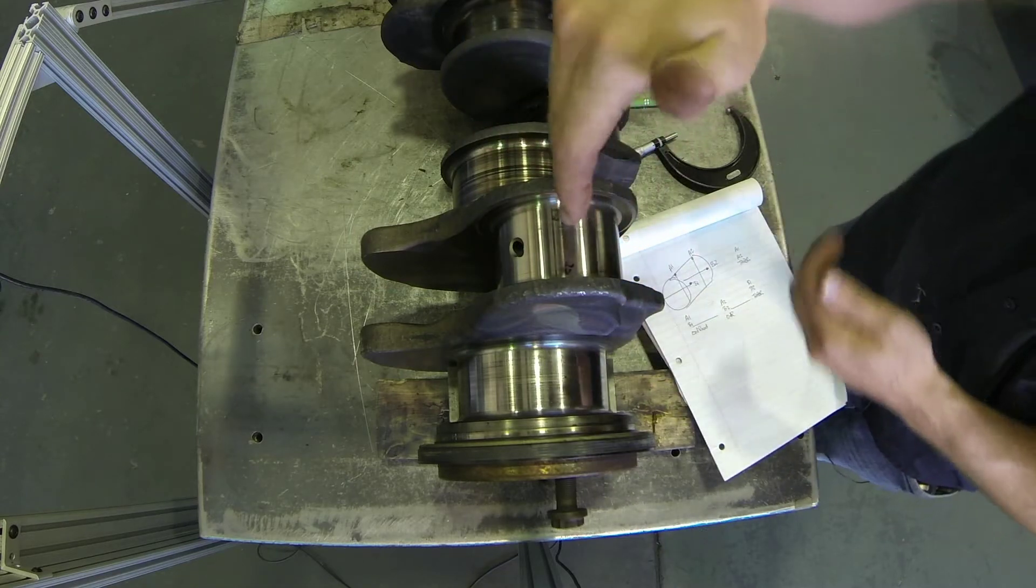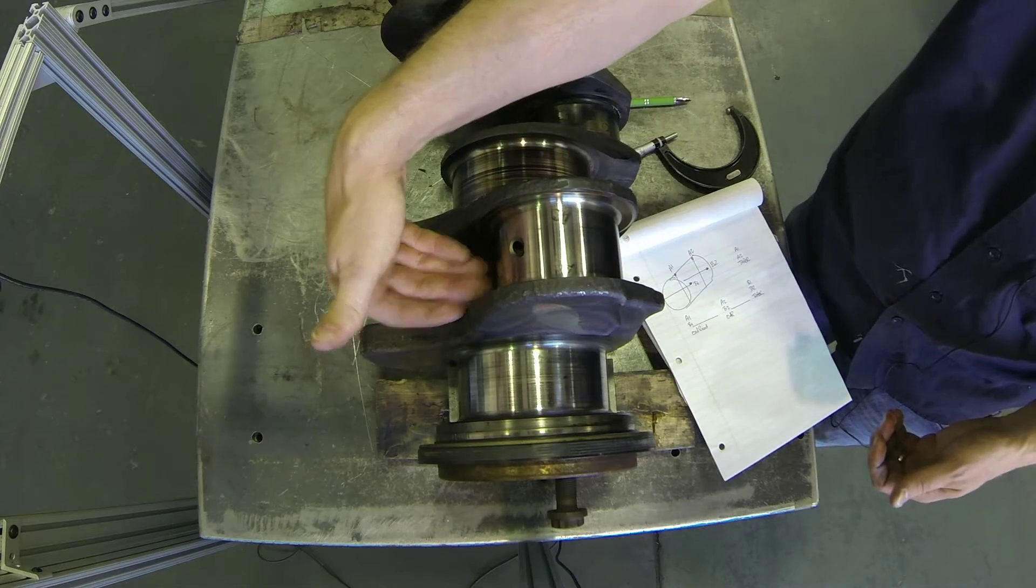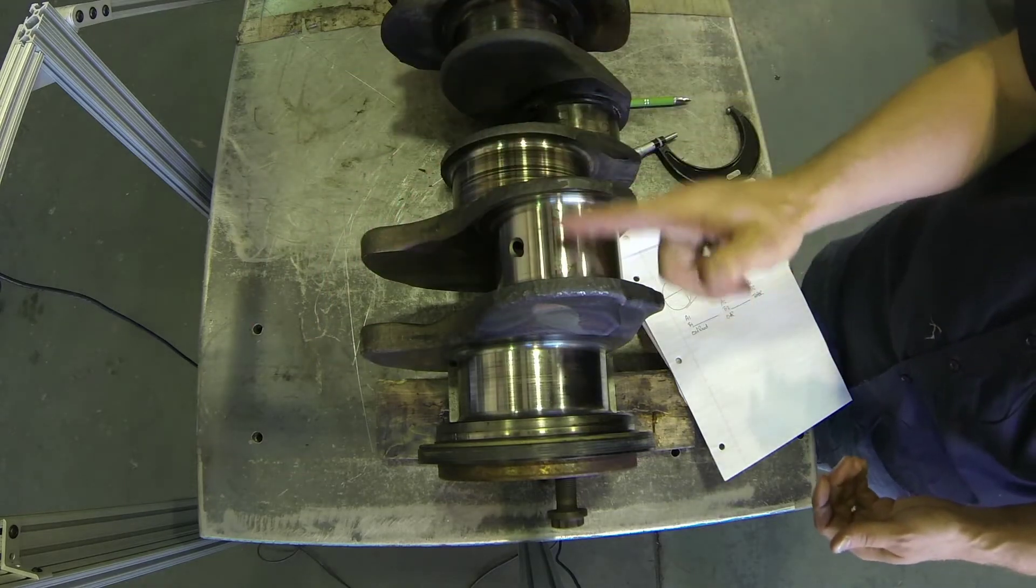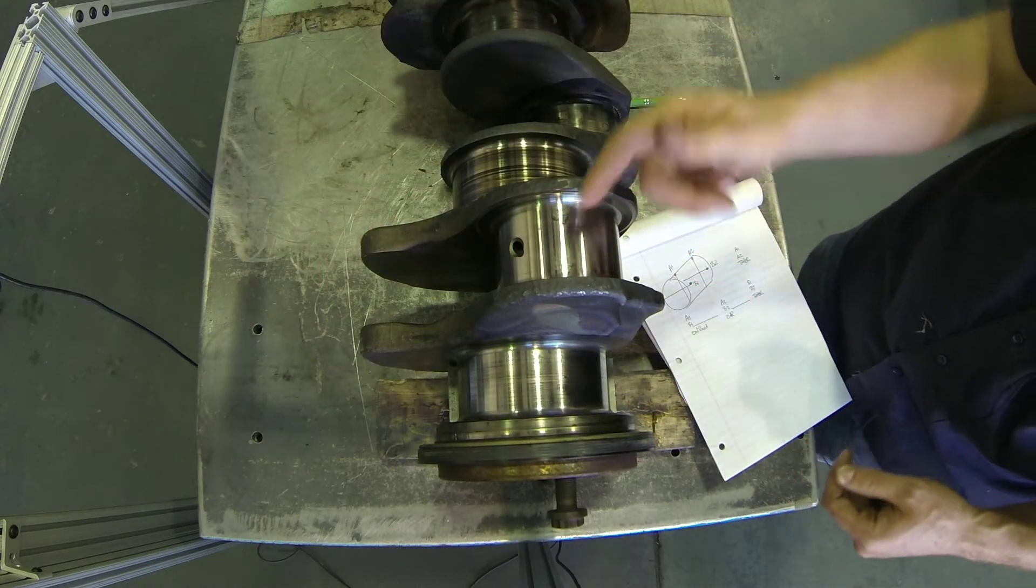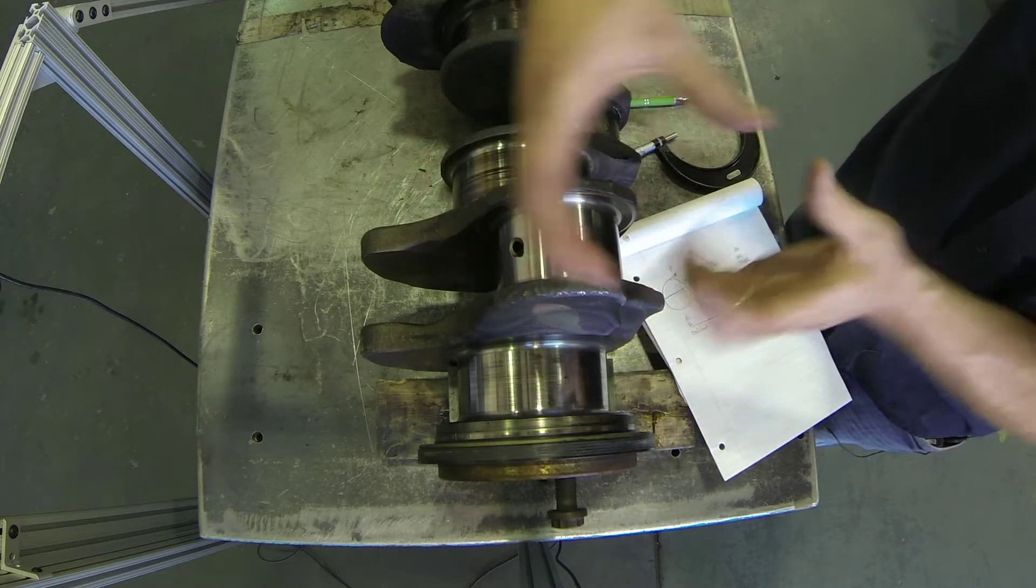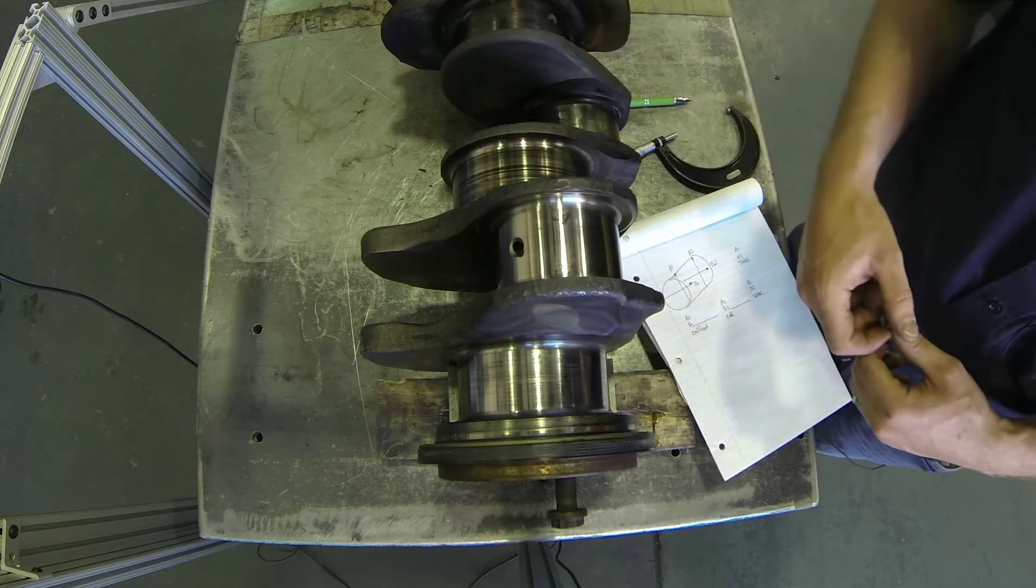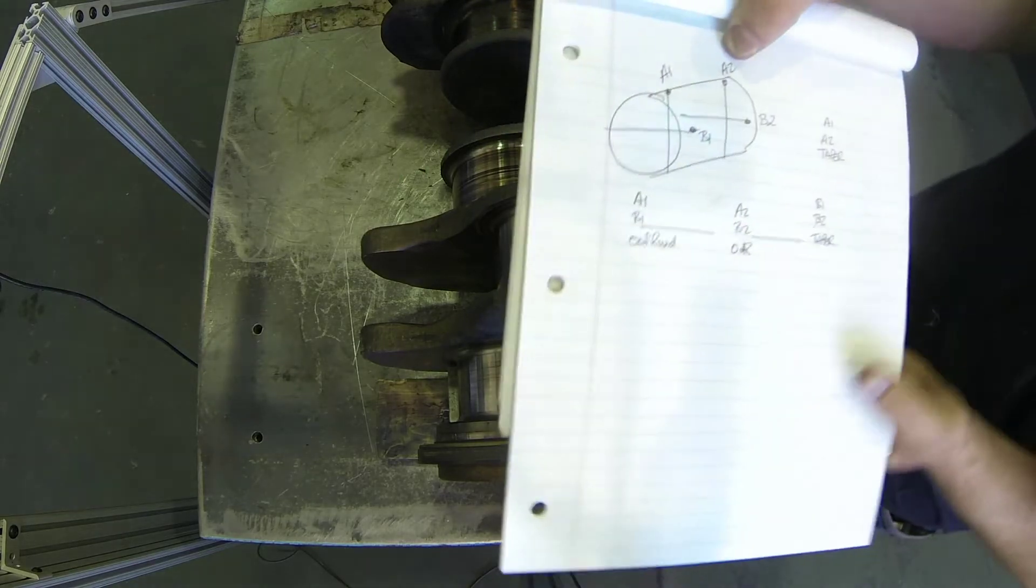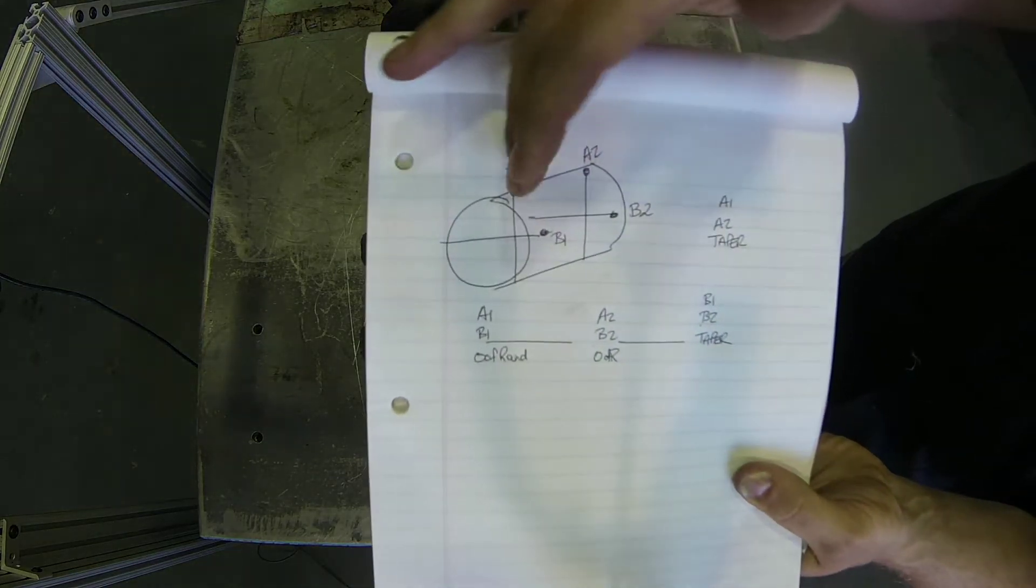So all I've done is simply picked a vertical axis here and a horizontal axis here. We're going to check for taper, and then we're also going to use those same measurements to check for out-of-round to see if the crankshaft journal has actually ovaled at all. We're going to do that by tracking our information, so I just drew a really rough drawing of our connecting rod journal.